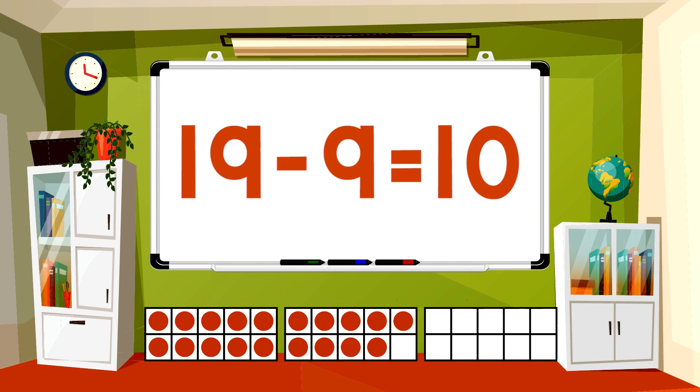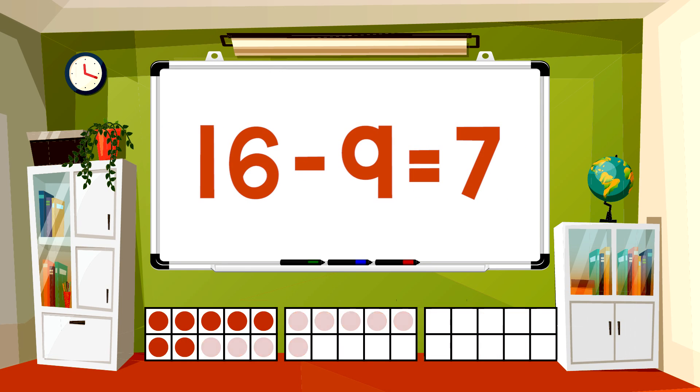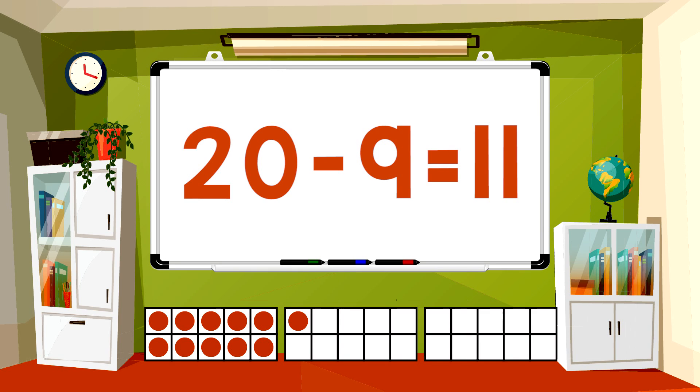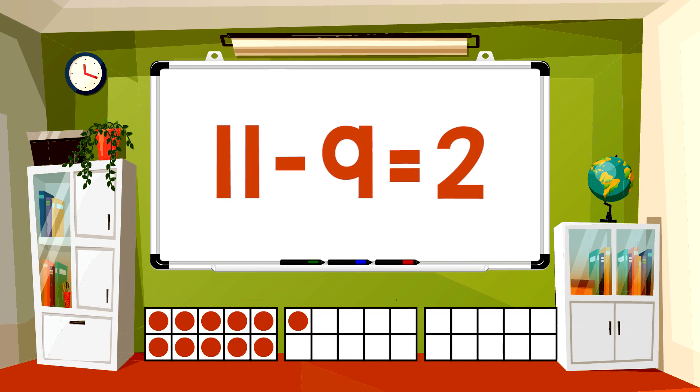19-9 equals 10, 16-9 equals 7, 14-9 equals 5, 20-9 equals 11, 11-9 equals 2.